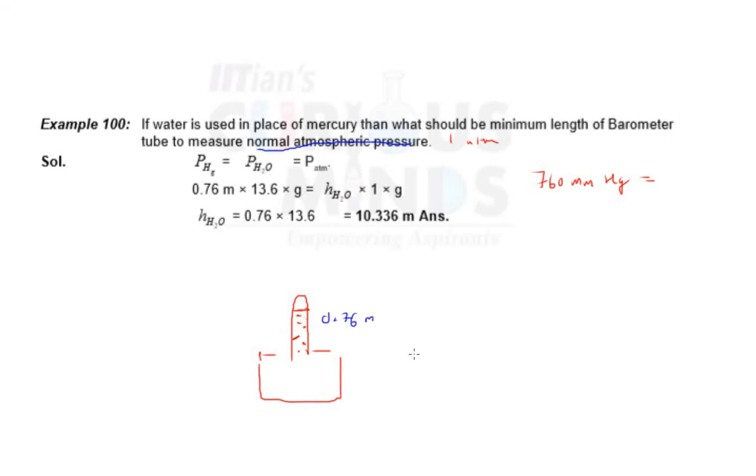So this 0.76 meters into the density of mercury which is 13.6, it will be given to you. This is height, this is density, and into the gravitational force. So this is nothing but the pressure acting on this surface which is equal to 1 atm.